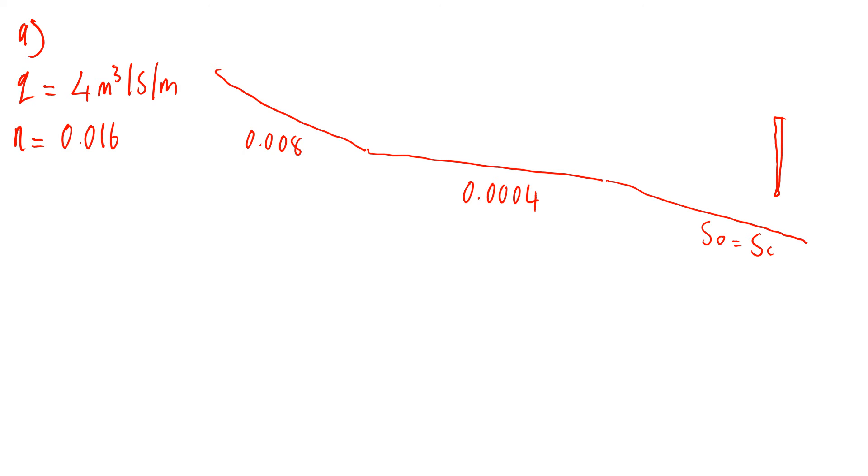So part A, we're going to write down the parameters we know. So we know q, small q is 4 cubic meters per square per meter, n is equal to 0.016. First of all we'll work out what YC is. Fairly straightforward, it's small q squared over g, cube root. And then you do 4 squared over 9.81, cube root, and you'll get 1.177 meters.